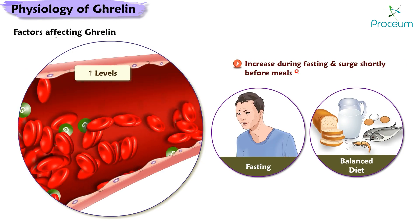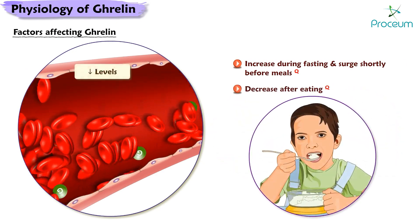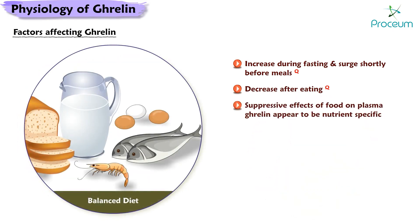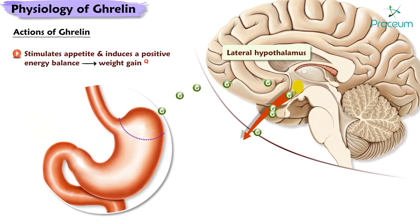Ghrelin levels decrease after eating. The suppressive effects of food on plasma ghrelin appear to be nutrient-specific, with carbohydrates having the greatest effect, followed by proteins and then lipids.